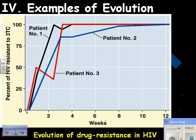In the beginning, there's just about no resistant HIV in any of the patients. But HIV copies itself really, really poorly. And so when it copies itself poorly, it messes up a lot — it mutates. And so in any population, there's always going to be one or two that are resistant to whatever drug you have, unfortunately.